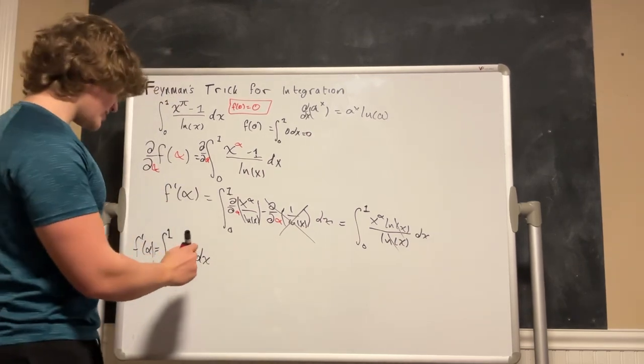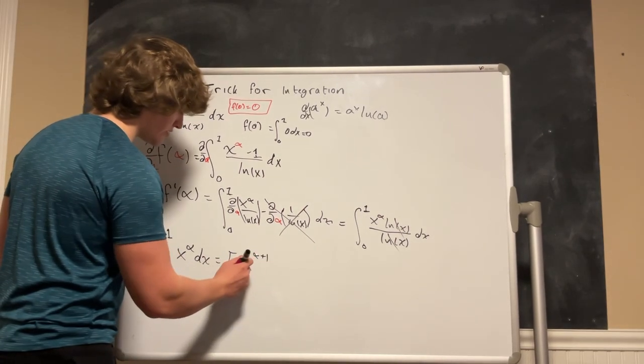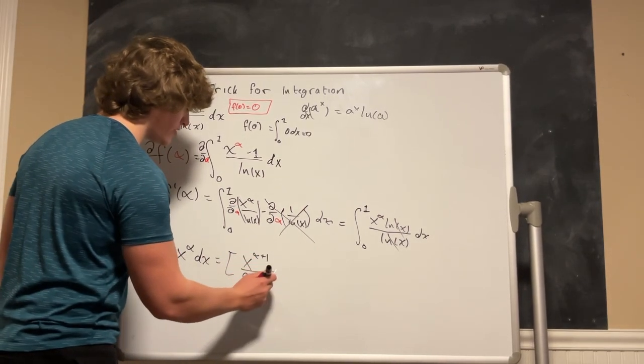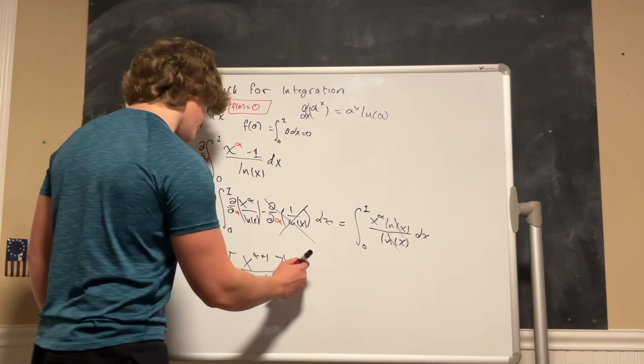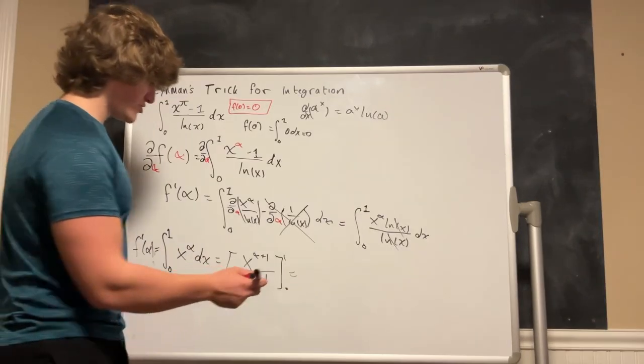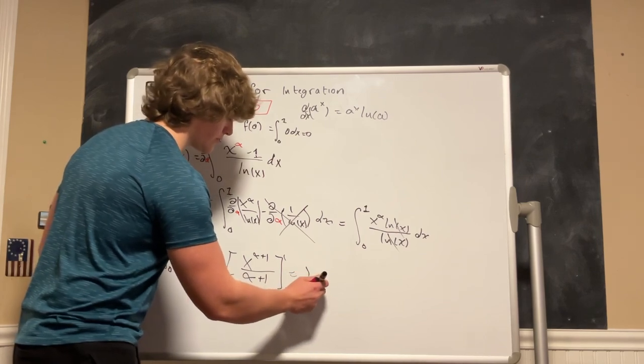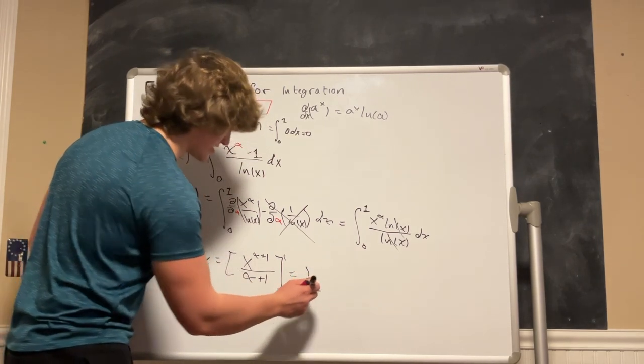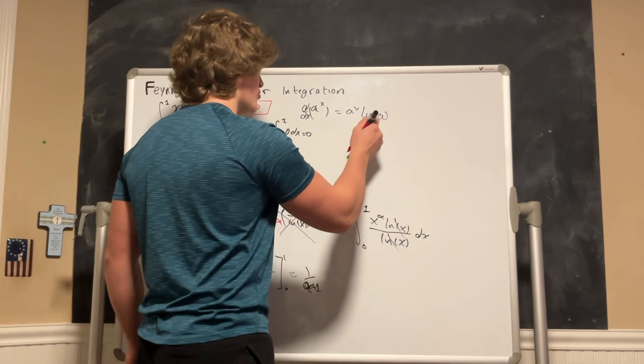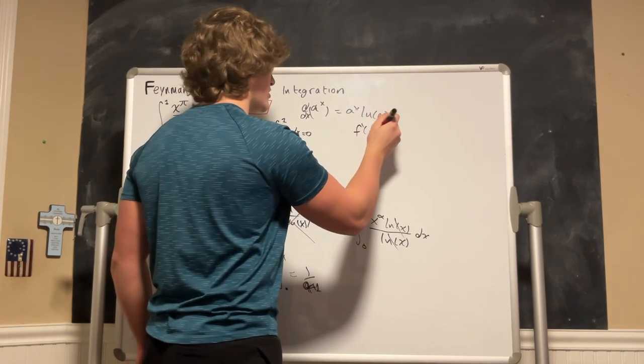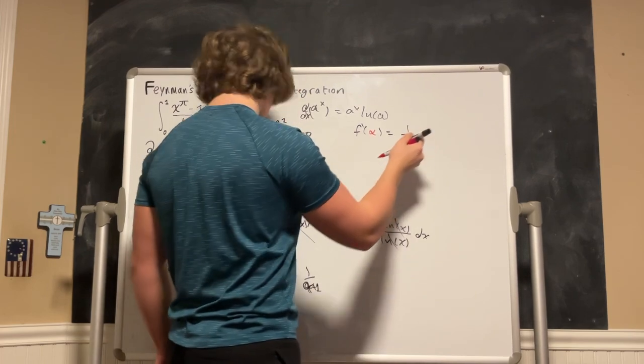So this integral right here just becomes x to the alpha plus 1 divided by alpha plus 1, and this is evaluated from 0 to 1 which just gives us 1 to the alpha plus 1 which is just 1. So this is 1 over alpha plus 1. Sorry if my alpha looks a bit weird there, I'm writing it sideways. So our f prime of alpha is just equal to 1 divided by alpha plus 1.